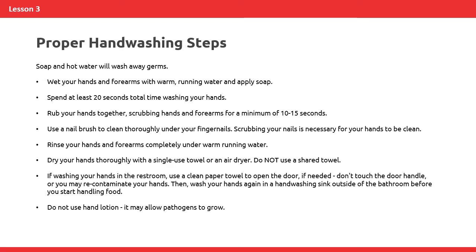Proper hand washing steps. Soap and hot water will wash away germs. Wet your hands and forearms with warm running water and apply soap. Spend at least 20 seconds total time washing your hands. Rub your hands together, scrubbing your hands and forearms for a minimum of 10 to 15 seconds. Use a nail brush to clean thoroughly under your fingernails — scrubbing your nails is necessary for your hands to be clean. Rinse your hands and forearms completely under warm running water. Dry your hands thoroughly with a single-use towel or an air dryer; do not use a shared towel. If washing your hands in the restroom, use a clean paper towel to open the door if needed, so you don't recontaminate your hands. Then wash your hands again in a hand washing sink outside of the bathroom before you start handling food. Do not use hand lotion, as it may allow pathogens to grow.